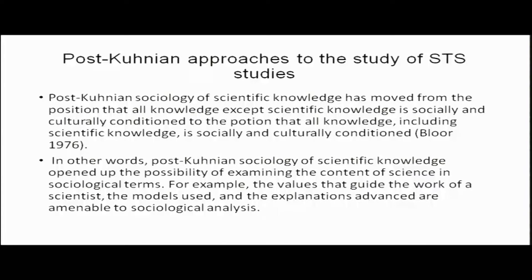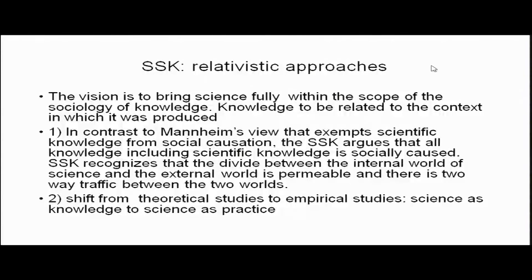Bloor argues that scientific knowledge also should be seen as socially and culturally conditioned. In other words, post-Kuhnian sociology of scientific knowledge opened up the possibility of examining the content of science in sociological terms. For example, the values that guide the work of a scientist, the models used and explanations advanced, are amenable to sociological analysis. These approaches are broadly included under the rubric of sociology of scientific knowledge. The vision is to bring science fully within the scope of the sociology of knowledge — knowledge to be related to the context in which it is produced.